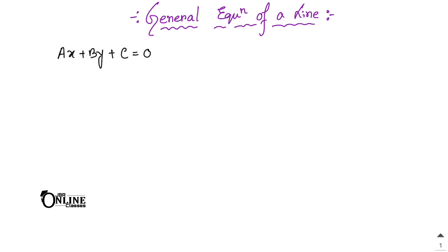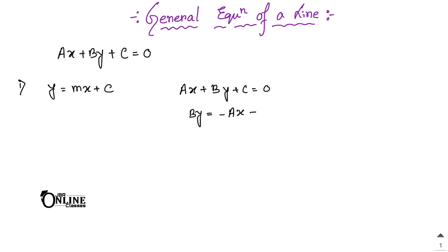In this video we are going to learn how to reduce the general equation to another form. The first form is y = mx + c. To reduce ax + by + c = 0 to this form: by = -ax - c, which gives y = (-a/b)x + (-c/b).